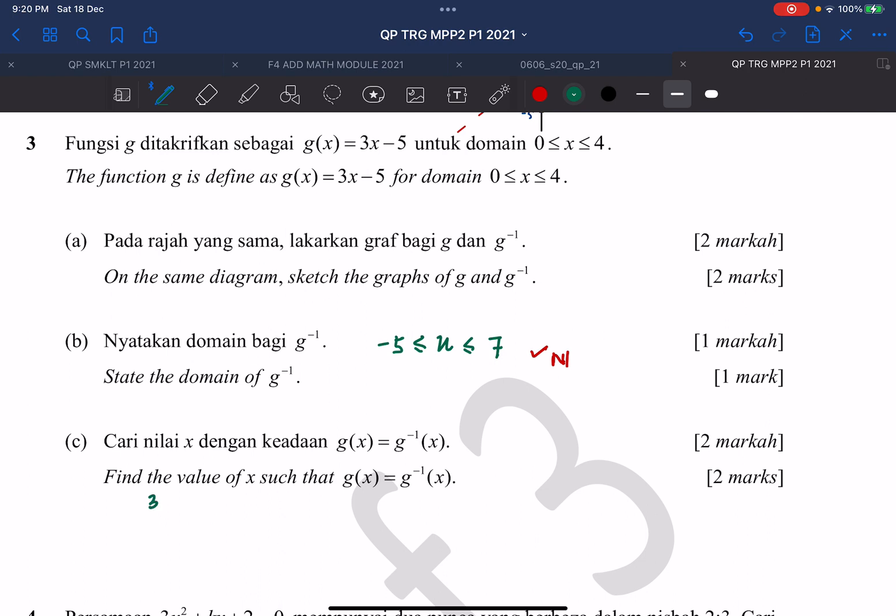So 3y minus 5 equals to x. And we express y in terms of x, so y will be equal to x plus 5 divided by 3.